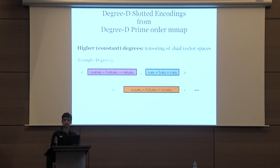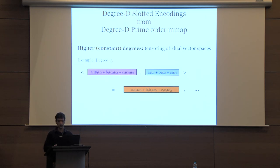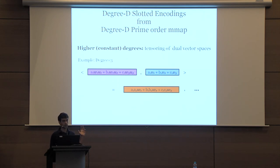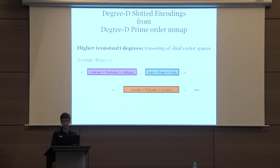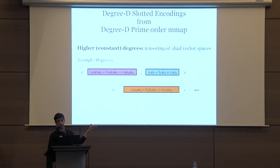For degree 3: as before, pick vectors U1,U2,U3 and V1,V2,V3, and additionally pick vectors W1,W2,W3. The W vectors are associated with the next level of computation. On the left-hand side, encode (A1,B1,C1) using a tensoring of W vectors and U vectors. On the right-hand side, encode using just V vectors. If you consider an inner product of these two vectors, you get A1·A2·W1 + B1·B2·W2 + C1·C2·W3—component-wise multiplication is still occurring, but now W1,W2,W3 remain and can be used for the next level computation. You can generalize this idea for constant degrees.